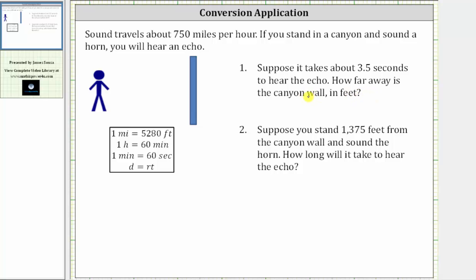Because we want the distance in feet and we're given the time in seconds, the first step is to determine the rate of 750 miles per hour in feet per second. We begin by writing the rate in fraction form, which is 750 miles per one hour. Now we multiply by unit fractions to convert miles per hour into feet per second, which means we need to convert miles to feet and hours to seconds.